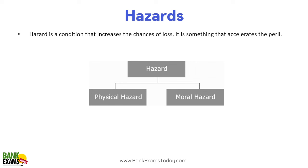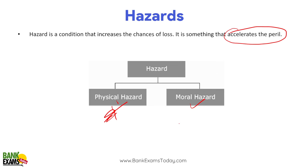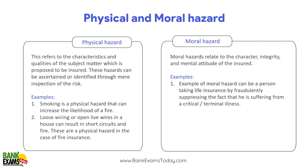Now, what is a hazard? A hazard is a condition that increases the chance of loss. It is something that accelerates the peril. The hazard increases or accelerates the chances of loss from a peril. The hazard can be physical or it can be a moral hazard. If a person pumping petrol at a petrol pump smokes a cigarette, the chances of fire at the petrol pump increase. That is a physical hazard.